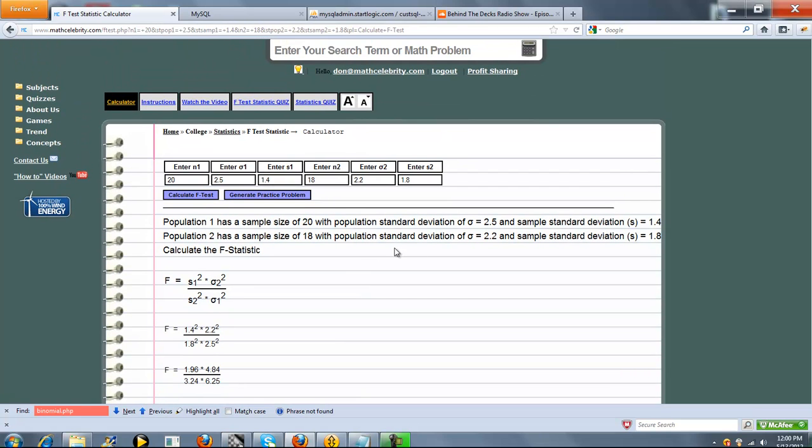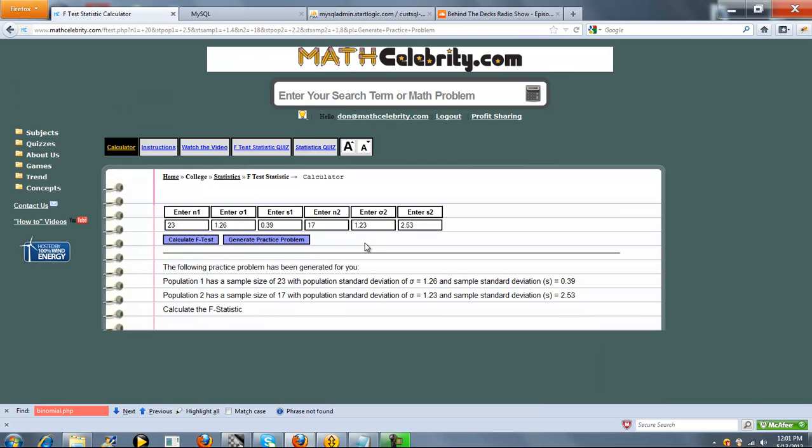When you want to run another problem, if you run out of problems in your textbook, you can actually press Generate Practice Problem, and it will run a completely random problem for you and load up these six values.